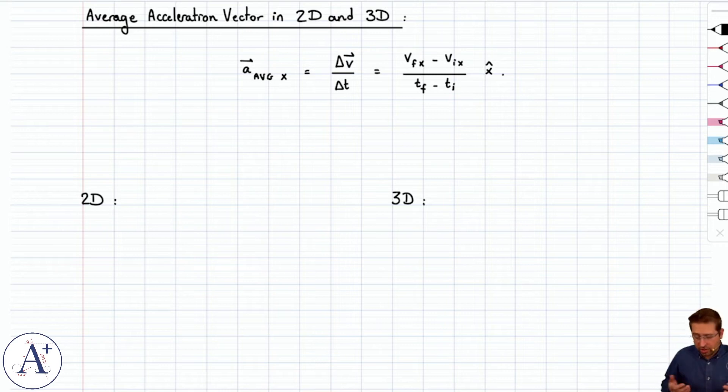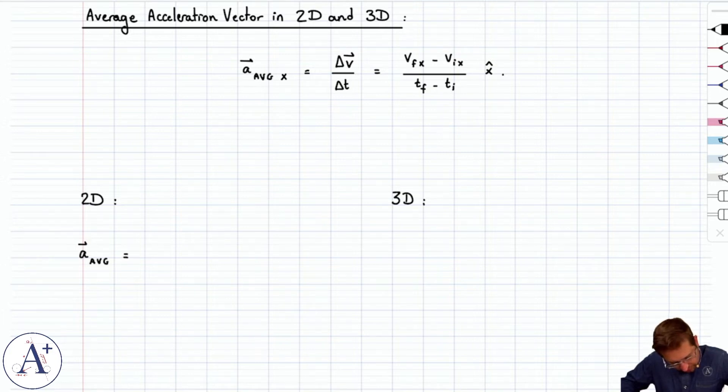And you can generalize that, except of course this is typically delta v over delta t instead of writing that big fraction. So what you're going to get here is a average is going to have two components. It is going to have delta v, now we need to be specific, delta v_x, because it's the x velocity only that you look at, divided by delta t carried by x hat.